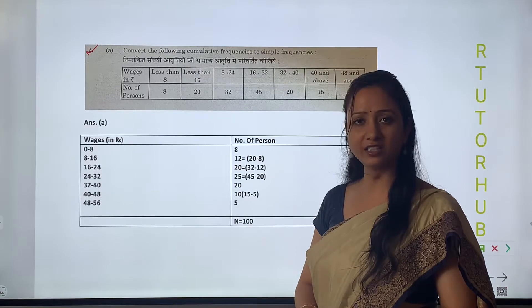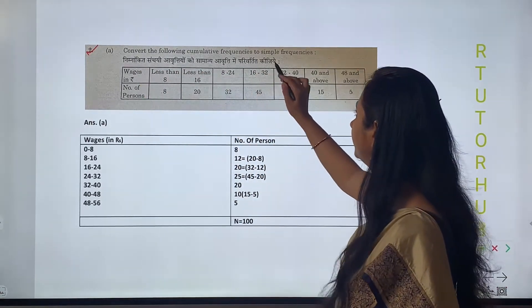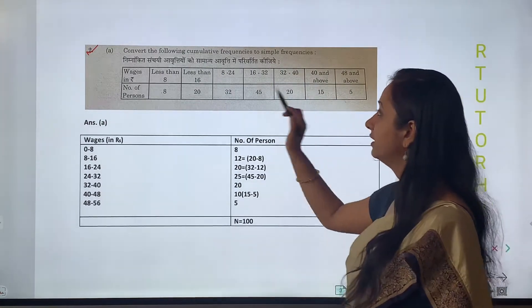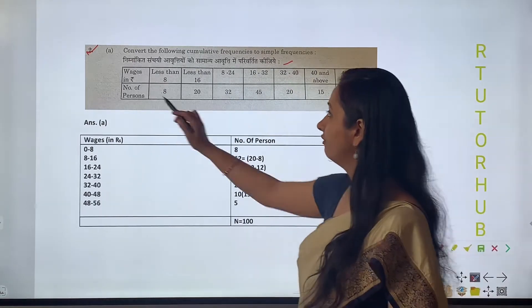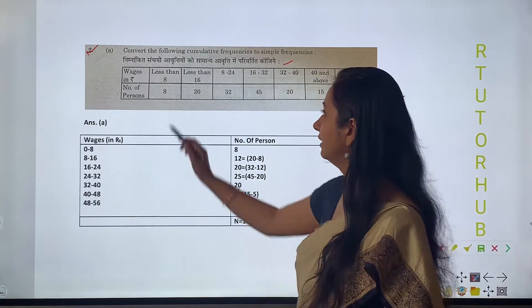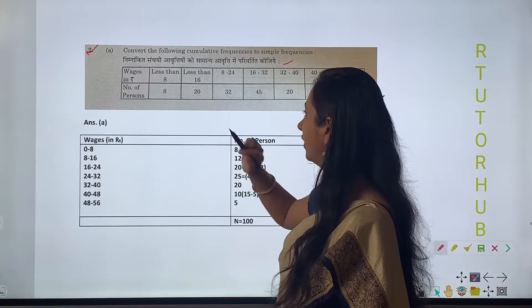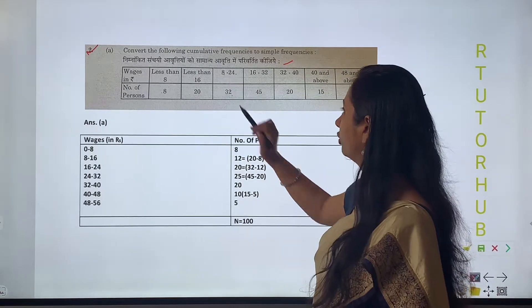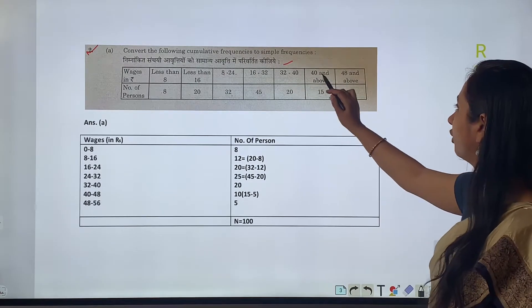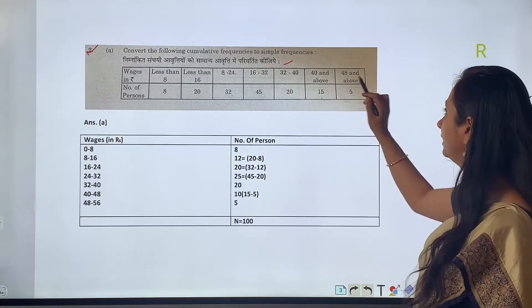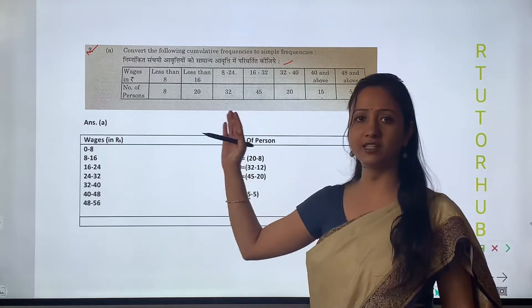This is our first practical question of Unit 1st: convert the following cumulative frequency to simple frequency. Wages and number of persons are given. Less than 8 is 8, less than 16 is 28, less than 24 is 32, less than 32 is 45, less than 40 is 20, 40 and above is 15, 48 and above is 5. Here you can see the cumulative frequency that is given to us.